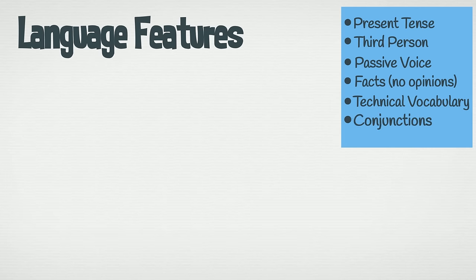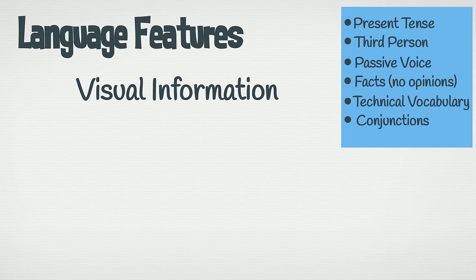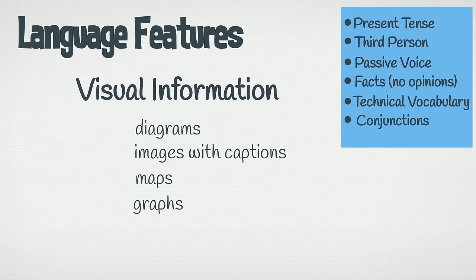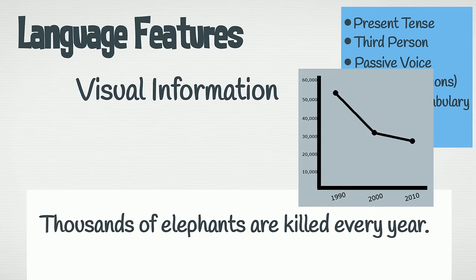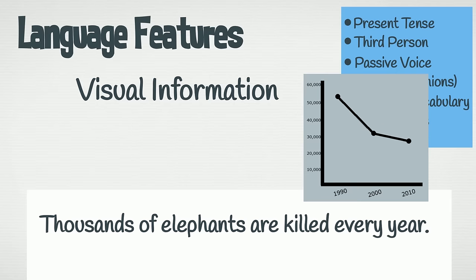Another feature of information reports is visual information. This includes diagrams, images with captions, maps, graphs, tables and charts. These should be used to support the written information in a report. For example, in our report about elephants, we might include a graph to really make clear to the reader how many elephants are being killed each year.